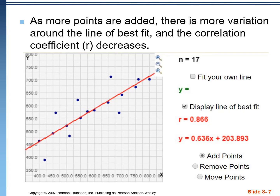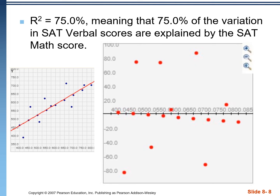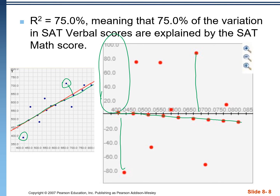Now we add seven more points and we can see there's a lot more scatter. Our r value drops — it's still a strong r value, but it's nowhere near 1.0 anymore — and our equation is a bit different. Looking at the residual plot side by side with the actual scatter plot, each of these points pairs up with a point in the residual plot. We can see that the scale has gotten a lot larger, going from 0 to 100. Our r-squared — that 0.866 or so squared — tells us that 75% of the variation in SAT verbal scores can be explained by the SAT math score.